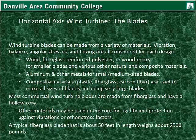Wind turbine blades can be made from a variety of materials, with vibration, balance, angular stresses, and flexing all considered. Wood, fiberglass reinforced polyester, or wood epoxy are used for smaller blades. Aluminum and other metals are used for small to medium sized blades. Composite materials such as plastic, fiberglass, and carbon fiber are used for all sizes including very large blades. Most commercial wind turbine blades are made from fiberglass with a hollow core. A typical fiberglass blade about 50 feet in length weighs around 2,500 pounds.